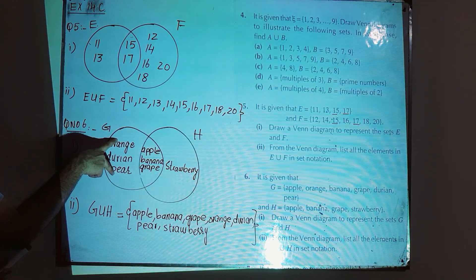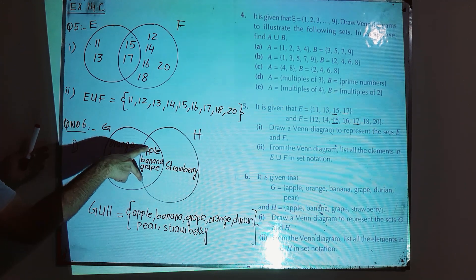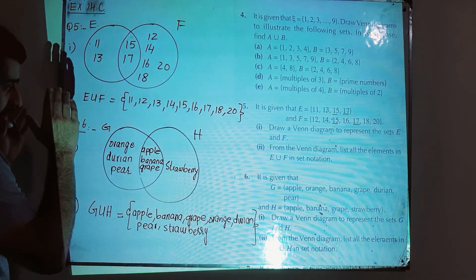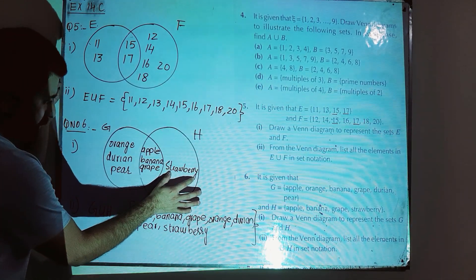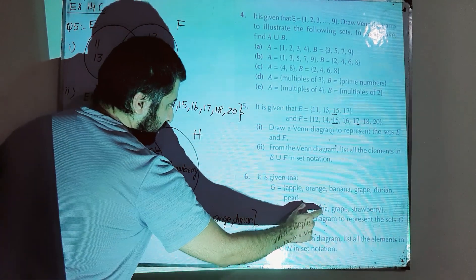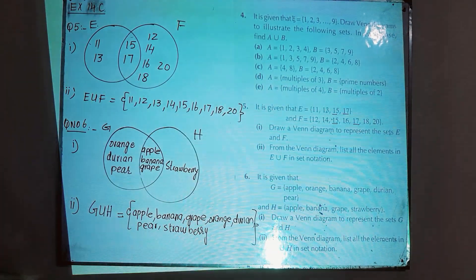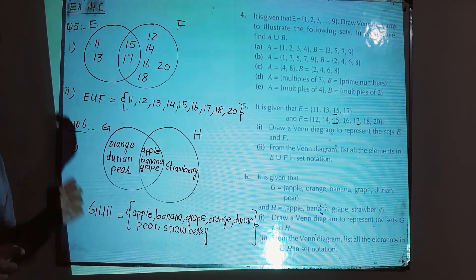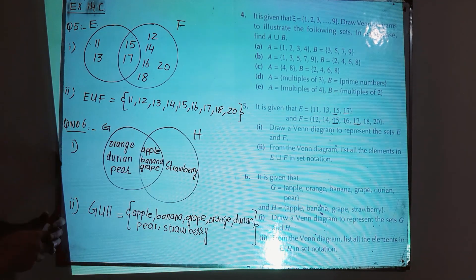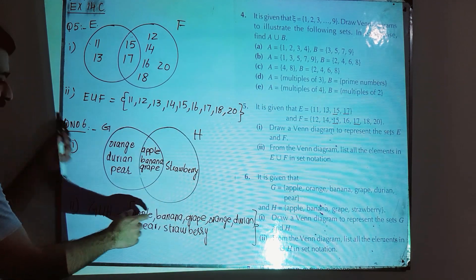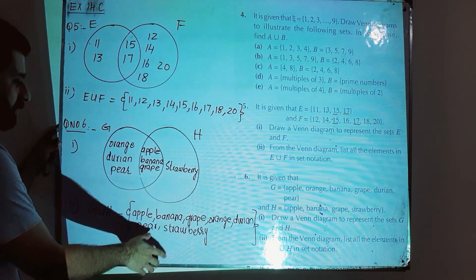Orange, pear, and durian belong only to G and are written in G's exclusive section. Strawberry belongs only to H and is written in H's exclusive section. For G union H, write all fruits from both sets in a single set: {apple, banana, grape, orange, durian, pear, strawberry}.